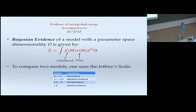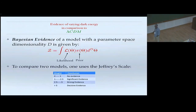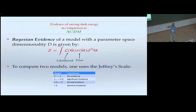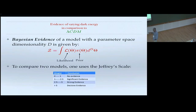The Bayesian evidence, or global likelihood, is the integral of the likelihood times the prior over all parameters. This can be done with nested sampling — MultiNest. To compare two models, we use the Jeffreys scale: if the difference in log Z is less than one, there is no significant evidence; between one and 2.5, significant evidence; 2.5 to five, strong evidence; greater than five, decisive evidence. The corresponding odd ratios are roughly: below one = inconclusive, around two = weak, around seven = significant, 20–150 = strong, greater than 150 = decisive.